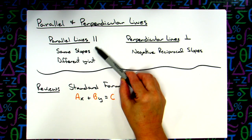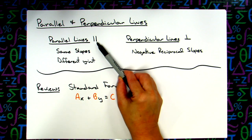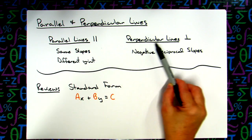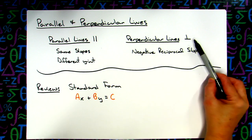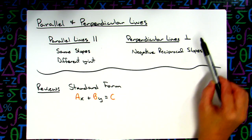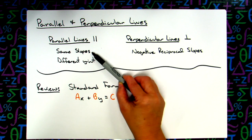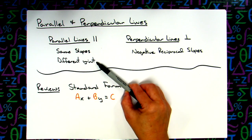We've got parallel lines — there's your geometric notation for parallel — and perpendicular lines, with your geometric notation for that as well. When we've got parallel lines, they have the same slope, but if they're going to be different lines and parallel to each other, then we've got to have a different y-intercept.